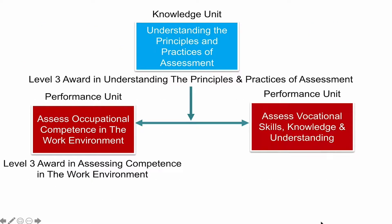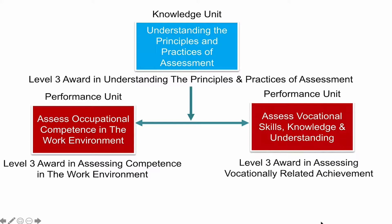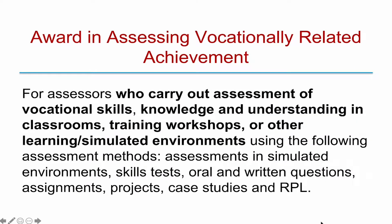The other Performance Unit is Assess Vocational Skills, Knowledge and Understanding. If you do this Performance Unit with the Knowledge Unit, you end up with a Level 3 Award in Assessing Vocationally Related Achievement. That's the Level 3 Award we're offering on our courses — the one we think is most appropriate for the type of training we do, which is people coming on training courses to leave with a qualification. This is for Assessors who carry out assessment of vocational skills, knowledge and understanding in classrooms, training workshops or other learning and simulated environments, using methods such as skill tests, oral and written questions, assignments, project case studies and RPL. If you are delivering regulated qualifications to people who come on your courses, this is the award you should be looking at.